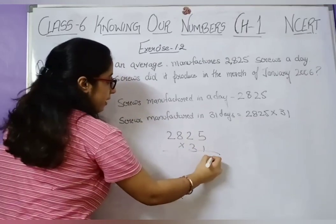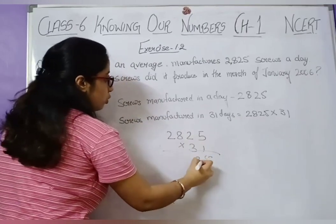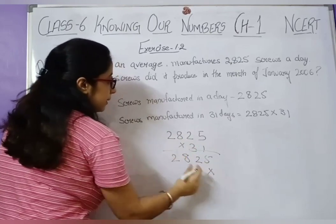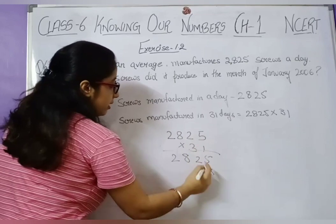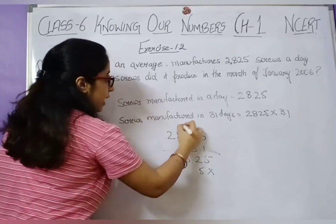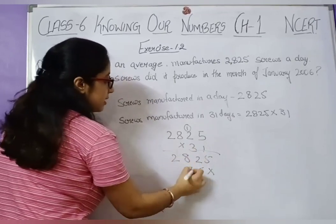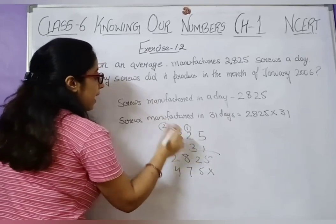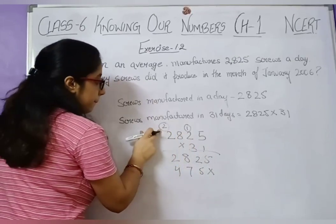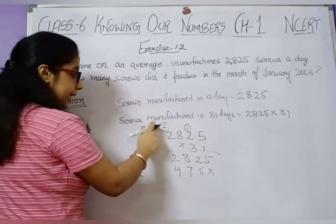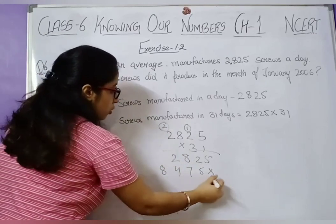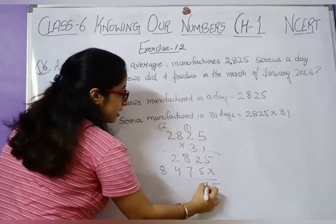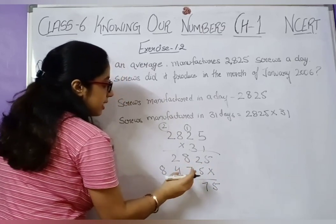Multiplying 2,825 by 31: first multiply by 1 — 5 ones are 5, 1 two is 2, 1 eight is 8, 1 two is 2, giving 2825. Then multiply by 3 — 3 fives are 15, carry 1; 3 twos are 6 plus 1 is 7; 3 eights are 24, carry 2; 3 twos are 6 plus 2 is 8. So second row is 8,475.